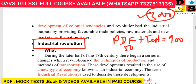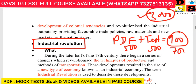Separately, if you want the PDF it is 500 rupees, and the test series is 500 rupees, so the total is 1,000 rupees. But if you take both together it will be discounted. The video price is 700 rupees, making the total 600 rupees.